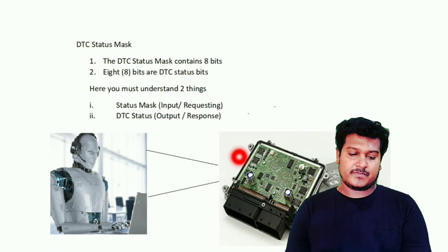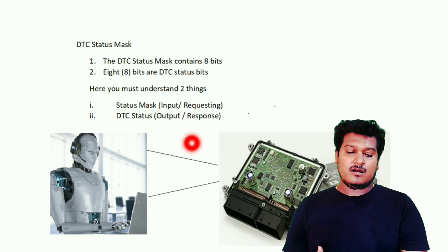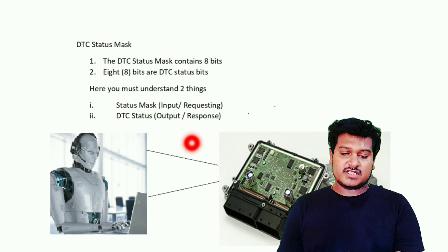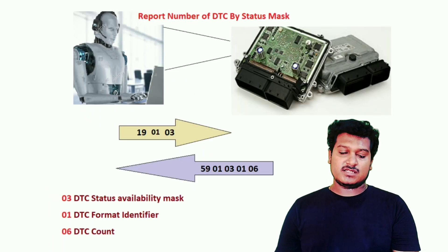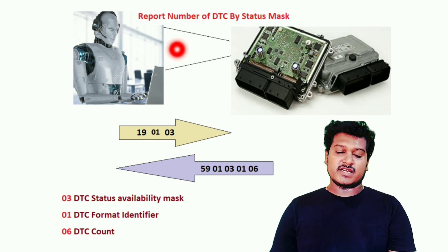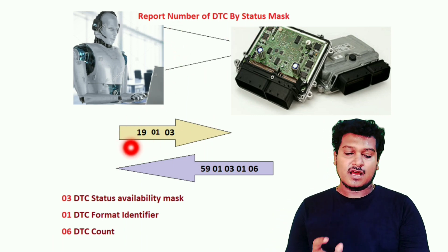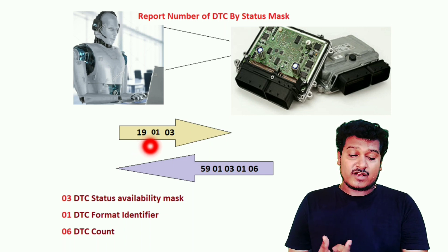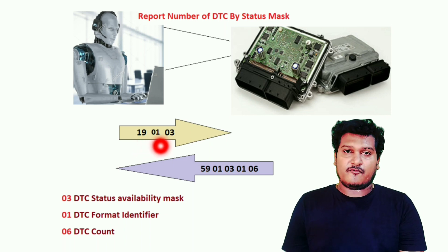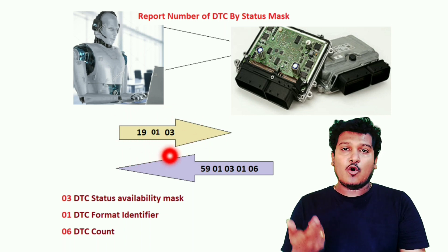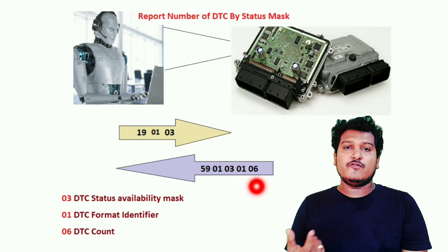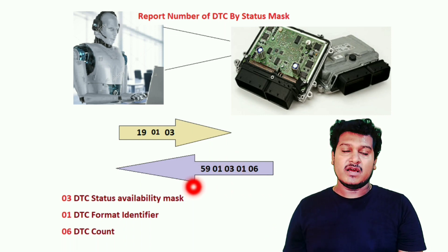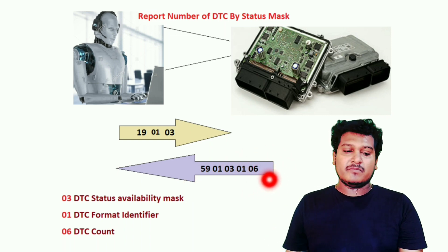Now let me give an example for requesting using sub-function 0x01. Sub-function 0x01 is 'Report Number of DTCs by Status Mask.' If you request with this sub-function, the ECU will tell you how many DTCs have been stored — it gives you the exact count. For example, if four DTCs are stored, it will return four.